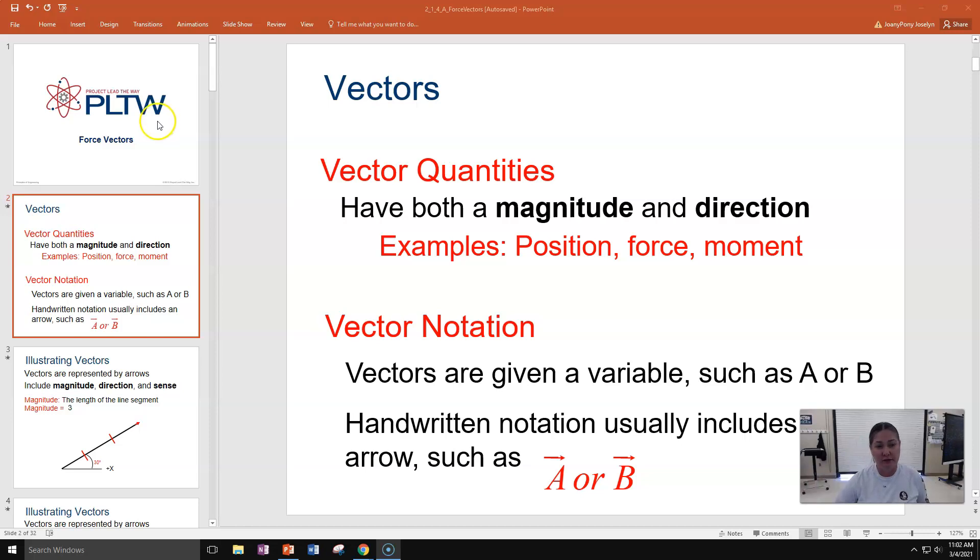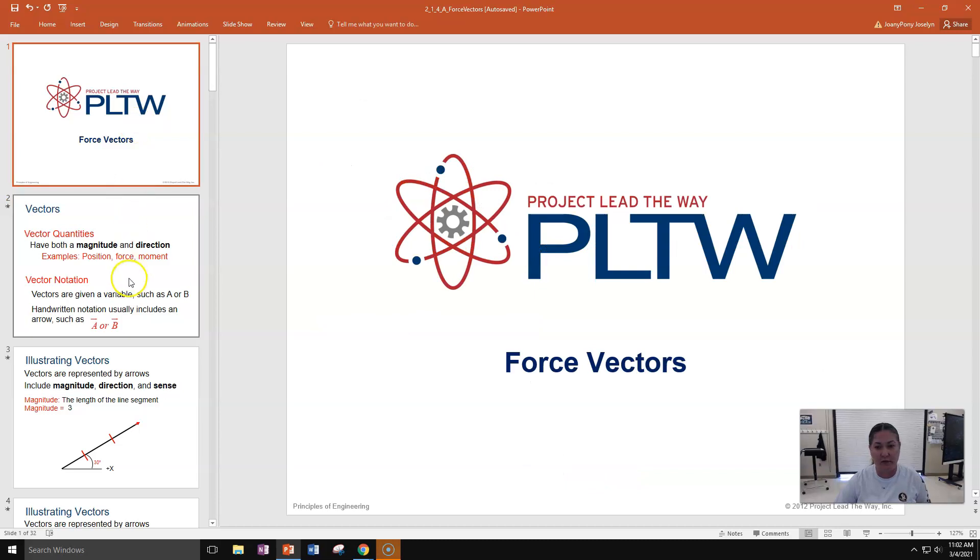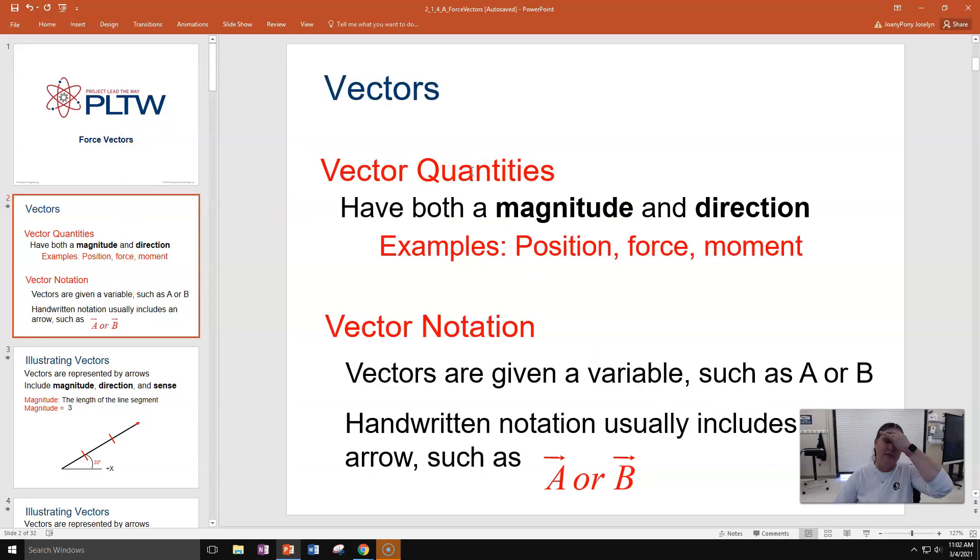We looked at force vectors, and we're going to just apply some basic trigonometry to these. When we get into a vector, we're looking at quantities. What's going on with a vector? It has two things going on. It has a magnitude, or how much, and a direction. Which way is it going? What force is being applied somewhere? Some examples of this are position, force, and moment, meaning that each of these items has two things going on. We'll see that they all have both magnitude and direction, and that's what makes them a vector.